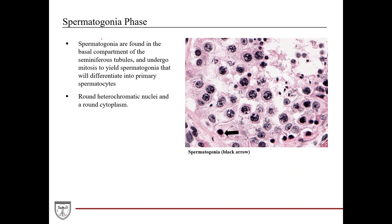In the spermatogonia phase, as you can see here in this section, spermatogonia are found in the basal compartment. Remember there's the basal compartment and the adluminal compartment, which are separated by tight junctions between the Sertoli cells. The spermatogonia undergo mitosis to eventually differentiate into primary spermatocytes. Histologically, they have very round heterochromatic nuclei and a round cytoplasm surrounding them.